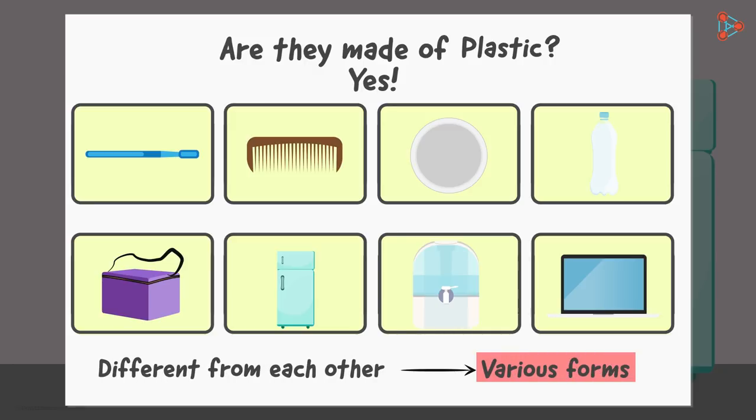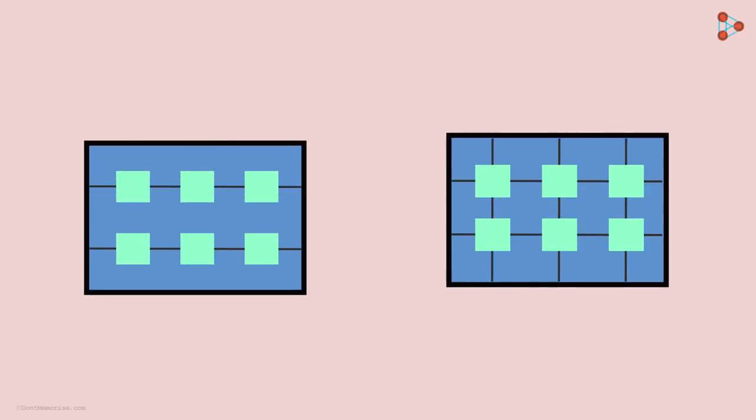What do we mean by this? To understand this, let us draw two figures. Can you tell me the difference between the two? Yes, the first one is linear in fashion. On the other hand, the second one is interlinked. This type is called the cross-linking type.